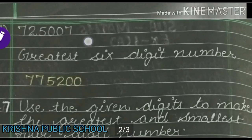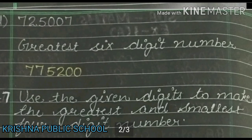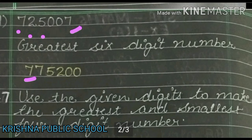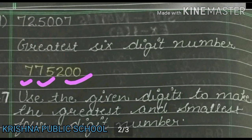So the greatest 6-digit number for part C is 8,43,210. Now we see part number D. We are given 7,25,007. Arranging in descending order, the greatest number formed is 7,75,200. I think you all understood how we can form the greatest number.